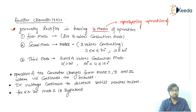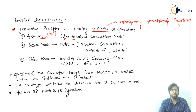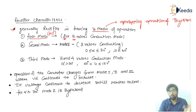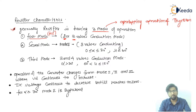In mode number one, there is alternating two-valve and three-valve conduction — at one time two valves are conducting, and when another thyristor is fired, three valves conduct simultaneously. This alternating two-valve and three-valve conduction characterizes mode one.